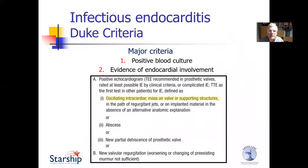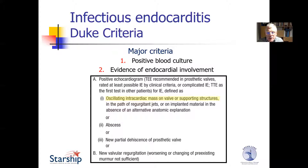I'm going to run through the various entities and have a few case discussions within those, just to highlight some of the commonalities and some of the differences with these valvulopathies. First up, infectious endocarditis. The major criteria are positive blood cultures and evidence of endocardial involvement, and this endocardial involvement is usually seen with echocardiography. The characteristic finding is an oscillating intracardiac mass on a valve or supporting structure.